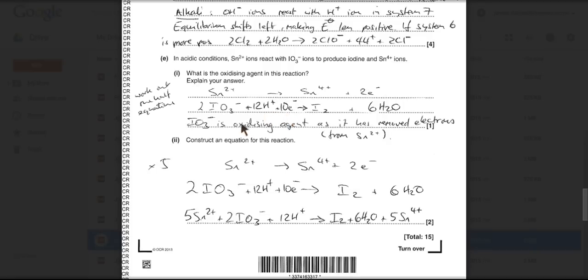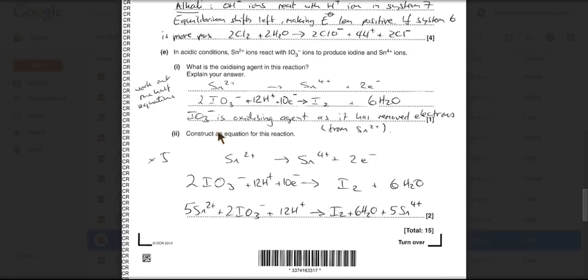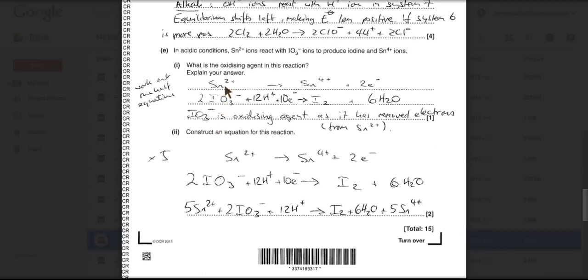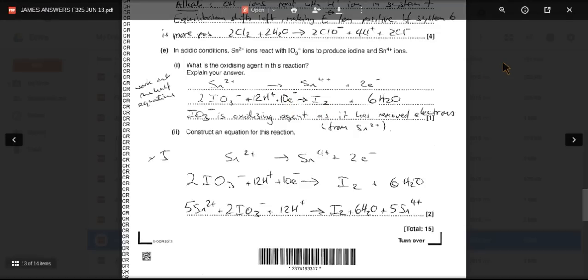But anyway, all that was required for this question was that IO3 minus is the oxidising agent because it is accepting the electrons or removing the electrons from the tin 2 plus. And then construct the equation for this answer. So these half equations weren't a waste of time. We need to get these two added together. We've got 10 electrons in this one, 2 in that one. So we need to multiply this one by 5 and then add it to that one. And you get this full equation here. I do go through half equations in quite a lot of detail in my videos. So that's why I haven't done it there. Because I'm limited for time on these things.